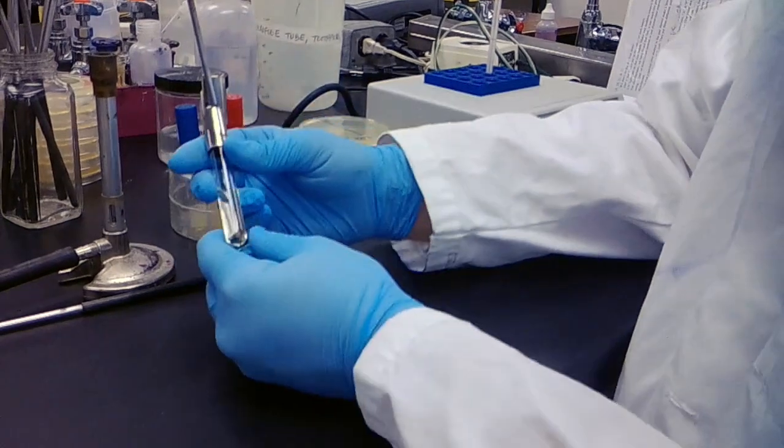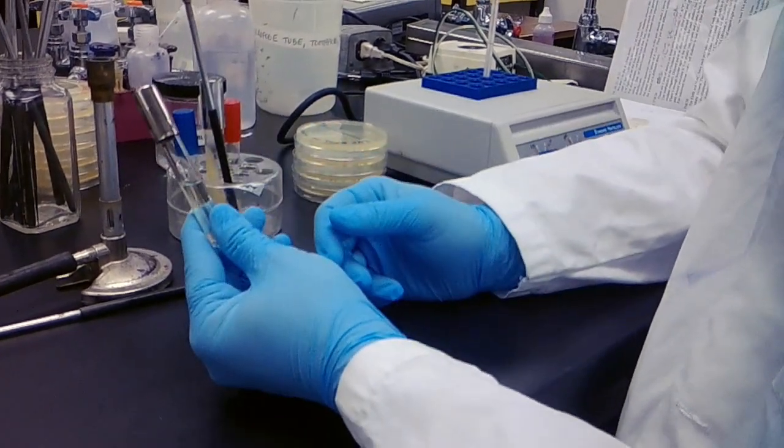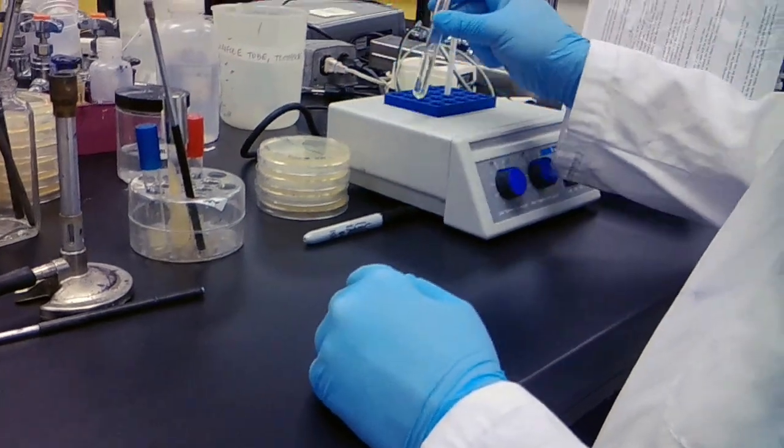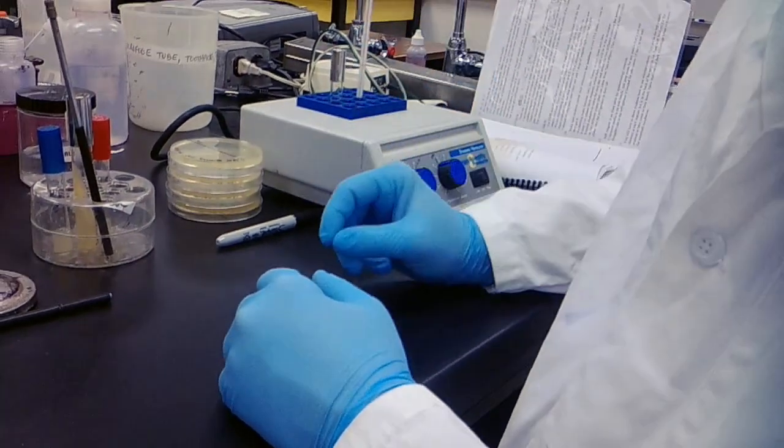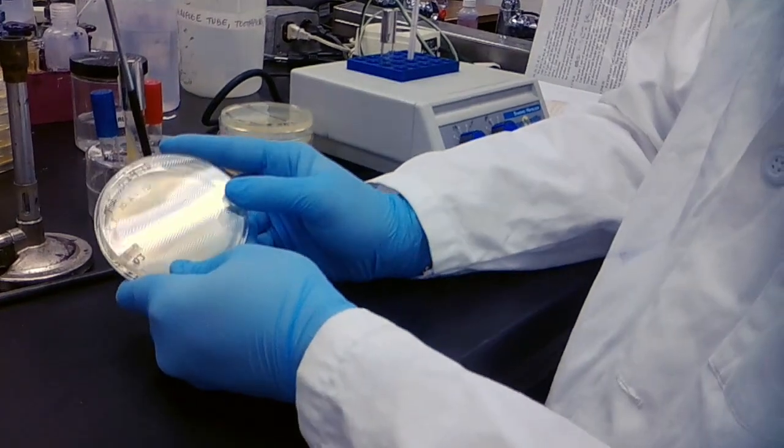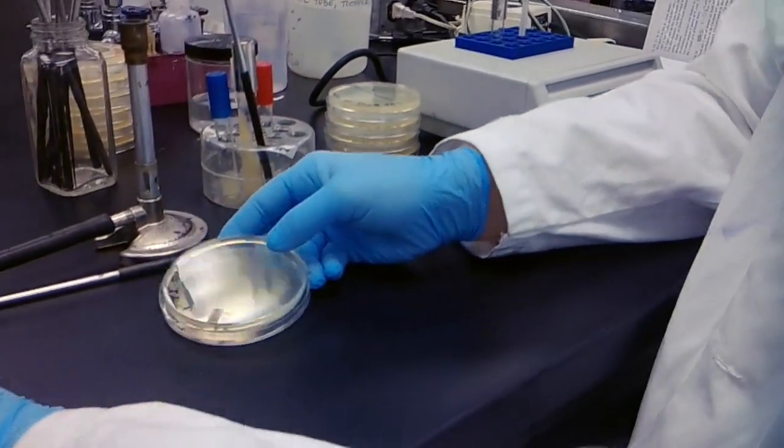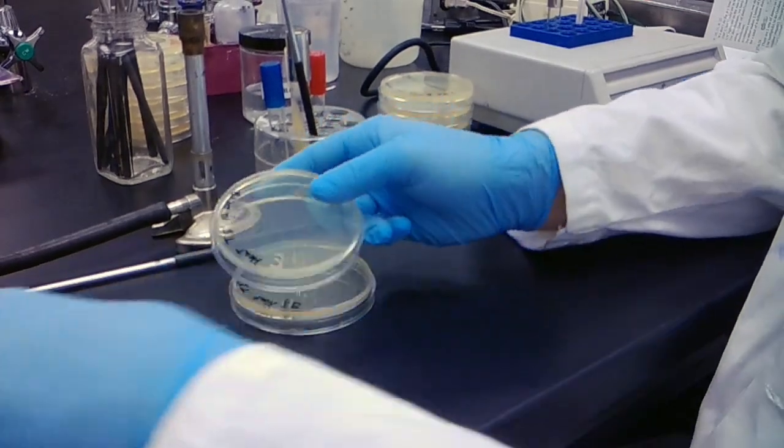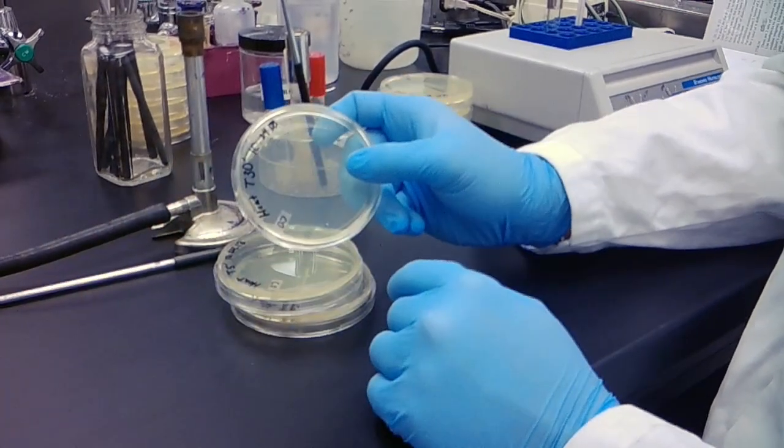Now we're going to put our mixed culture into our heat block and wait one minute, then we will spread for isolation on our T1 plate. We'll repeat this for our five minute time point and our 30 minute time point.